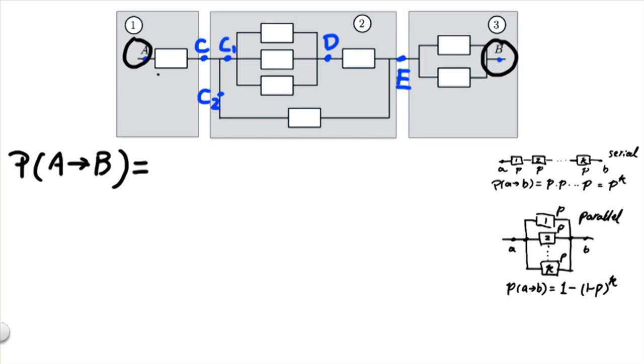Now because they're independent and in a serial structure, as seen by the definition of a serial structure here, we see that the probability of A to B can be written as the probability of A to C multiplied by C to E, and finally E to B.